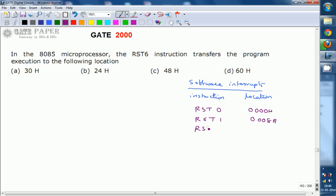And RST2, 00010H. That is decimal 16. RST3, 0018H. Decimal 24.